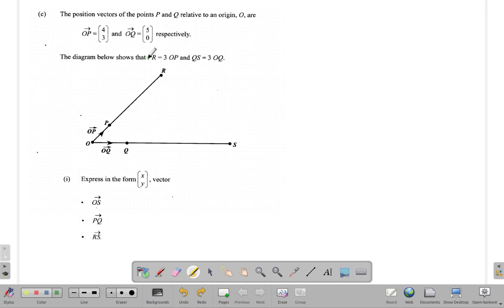The diagram below shows PR equals 3OP. From P to R, this distance is 3OP, meaning it is 3 times the distance OP, 3 times longer than the distance from O to Q.